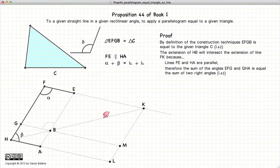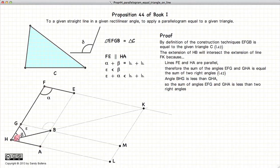Now to prove that our point K actually exists, the angle alpha and beta is equal to the sum of two right angles. And since HB gives us an angle epsilon which is less than beta,